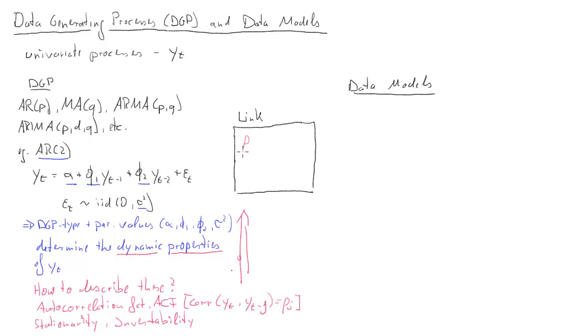It is these descriptions of the dynamic properties, the rho J's for positive J's. We have first order autocorrelation, second order autocorrelation and so forth, and the stationarity property, potentially invertibility as well. What we've done so far, we've discussed theoretical properties of a particular data generating process. So far we haven't used any data whatsoever.